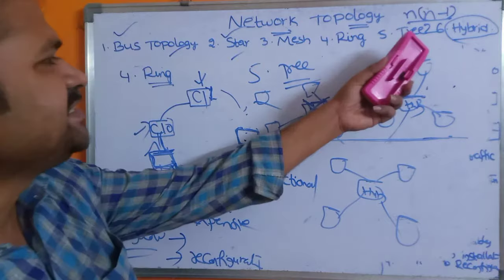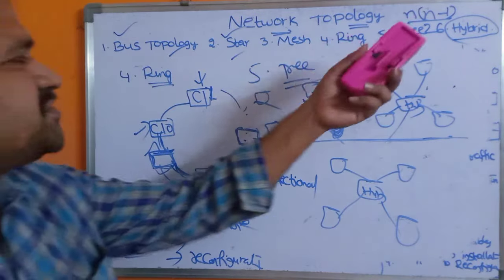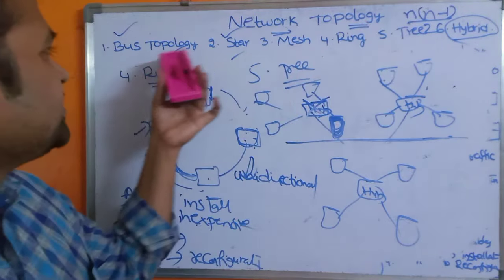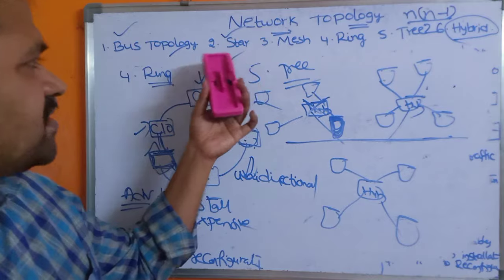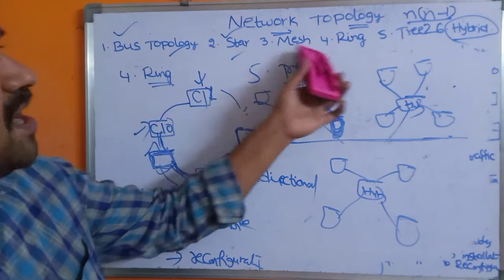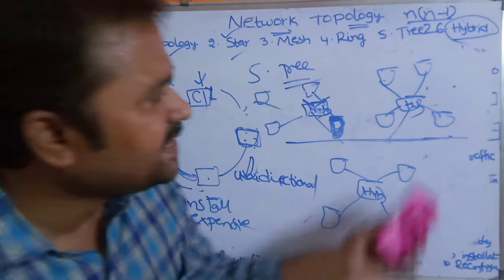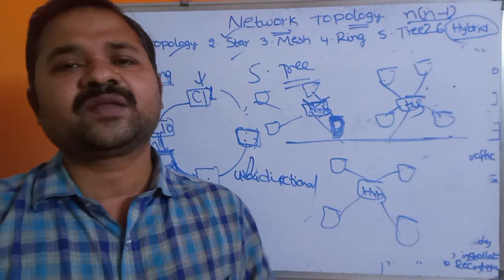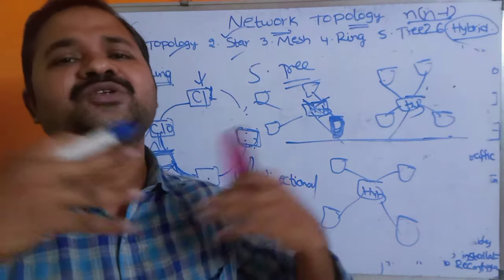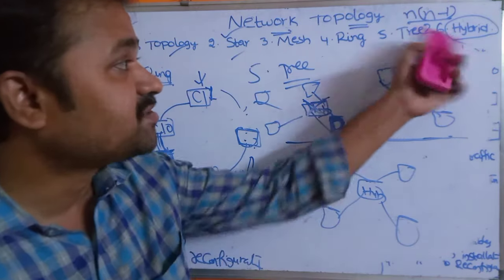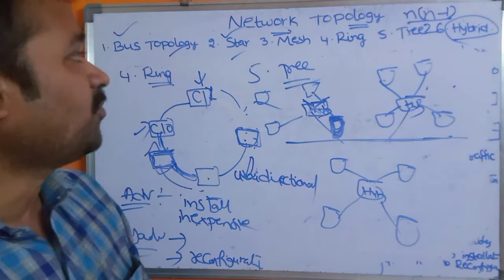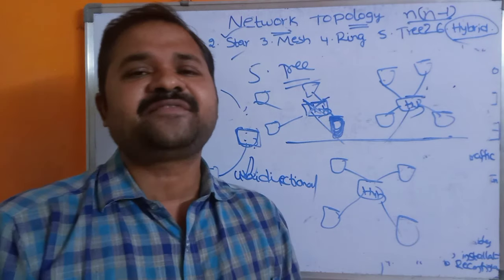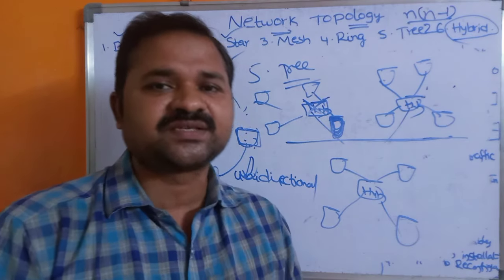The last topology is hybrid topology, which is a combination of two or more topologies — such as bus and star, star and mesh, or bus, star, mesh, ring, and tree combined. According to our requirements, we can combine any two or more topologies, and that combination is called hybrid topology. This concludes the discussion on network topologies in computer networks.